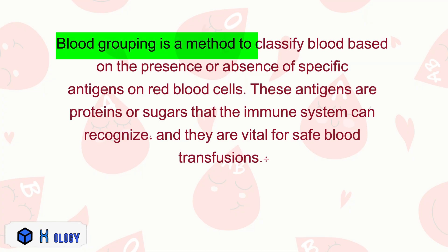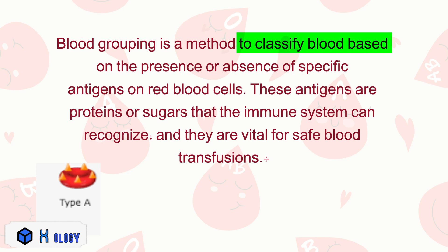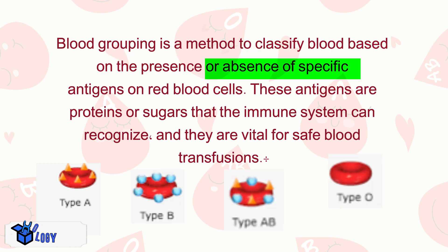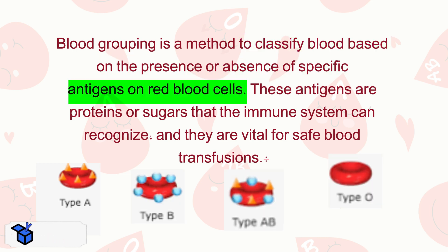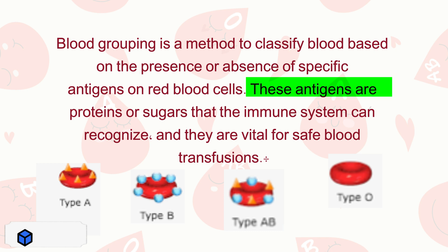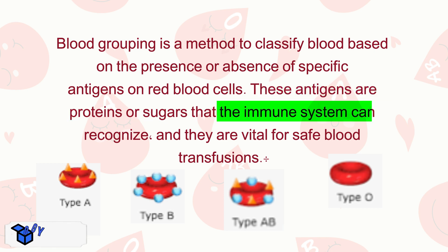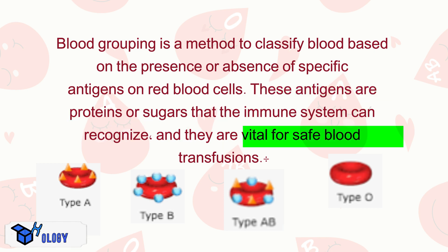Blood grouping is a method to classify blood based on the presence or absence of specific antigens on red blood cells. These antigens are proteins or sugars that the immune system can recognize, and they are vital for safe blood transfusions.